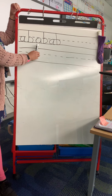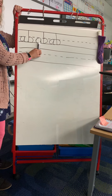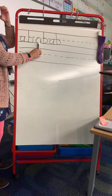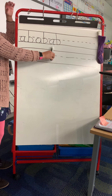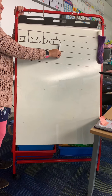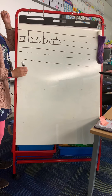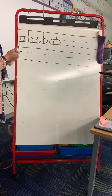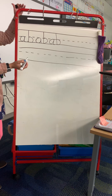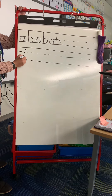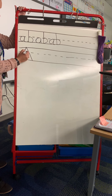We're going to start by saying the letters and the sounds. The name of the letter is A, the sound of the letter is a. The name of the letter is B, the sound of the letter is b. The name of the letter is A, the sound of the letter is A. The name of the letter is B, the sound of the letter is B.